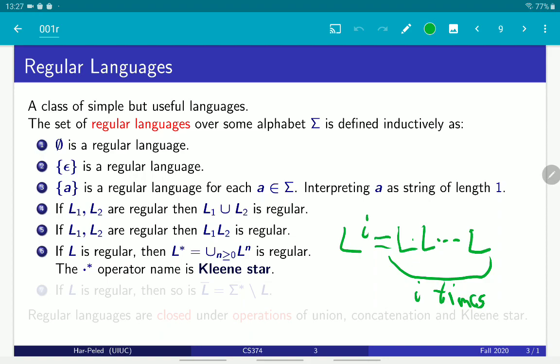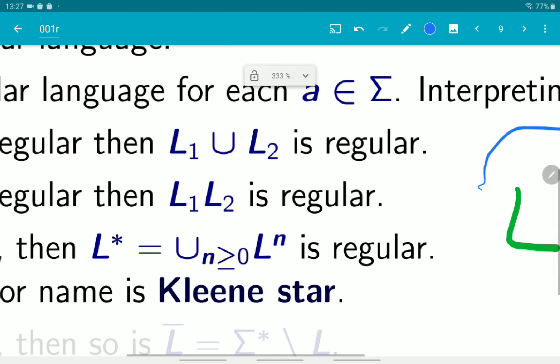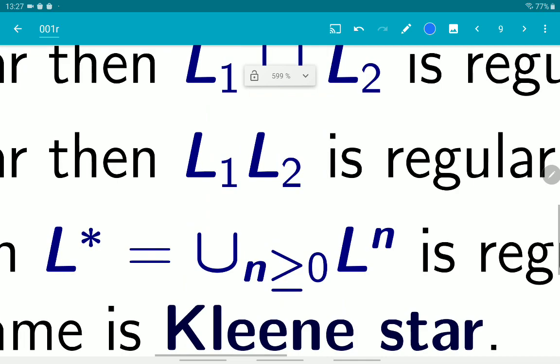To remind you, L^i is a shorthand for concatenating L with itself i times. So the Kleene star is just marked as L with a star—it's just the union of L^n where n goes from zero to infinity.